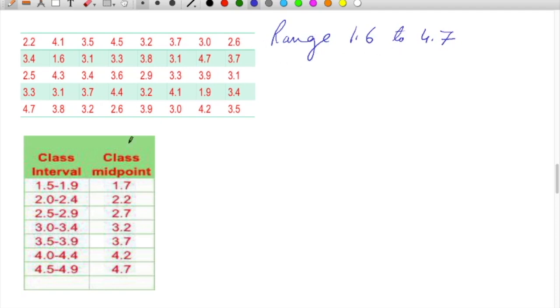We have identified certain intervals: 1.5 to 1.9, 2 to 2.4, 2.5 to 2.9, 3 to 3.4, 3.5 to 3.9, 4 to 4.4, and 4.5 to 4.9. So whatever value falls between these two values we will consider as the frequency of occurrence.